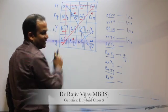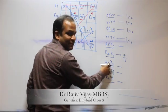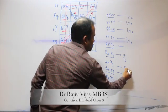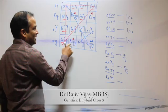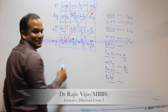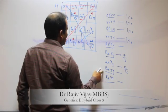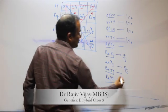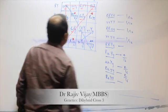Small r, capital Y, small y, small r, capital Y, capital Y — 2 by 16. Then after that, this one, this one. CME — how is it? Capital R, small r, small y, small y — 2 by 16.